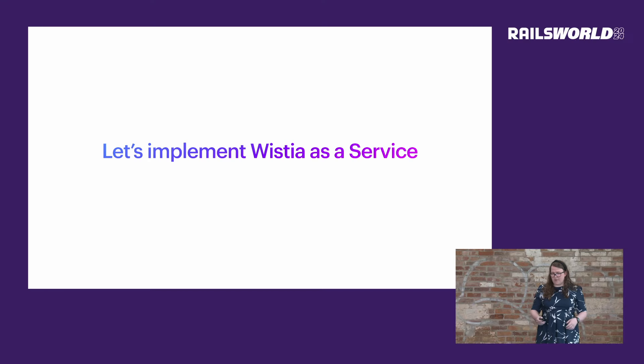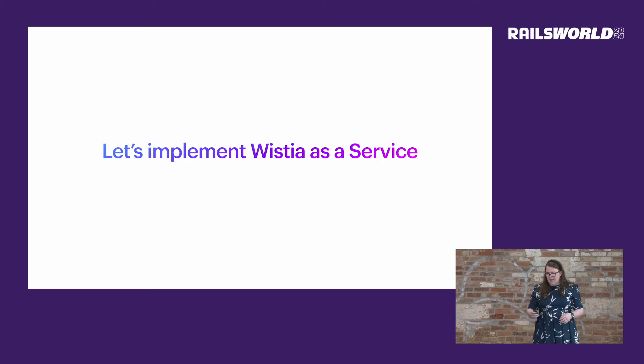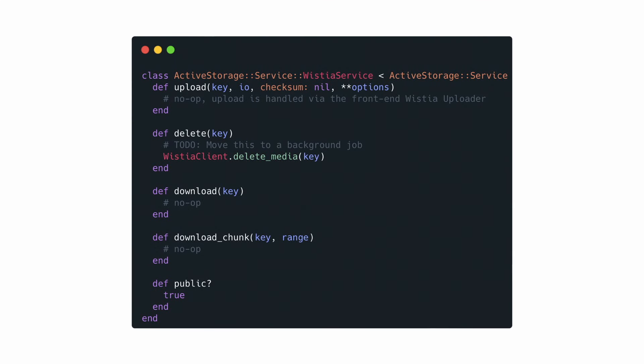Let's talk about implementing Wistia as a service. Video uploads will be handled by the front end using a JavaScript snippet that Wistia provides, and deleting files will happen via the backend through an API request. Since Wistia handles uploads directly via the JavaScript API, we don't need to perform any actions on upload — we'll just do a no-op and rely on their uploader. The delete method will make a call to the Wistia API to remove the video, and this operation could be deferred to a background job. For download and download chunk, since videos are streamed directly from Wistia, we skip these methods. We'll embed the Wistia player with HTML and JavaScript, and we can just assume videos are public.